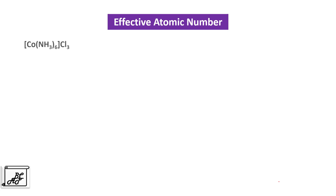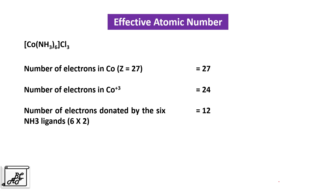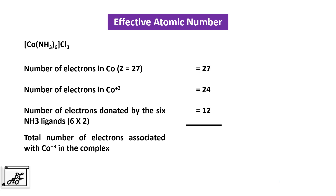Let's understand this with an example. The number of electrons associated with cobalt is 27, which is the atomic number of cobalt. The oxidation state of the central metal atom cobalt is plus 3. The total number of electrons in the Co3+ ion is 24. There are 6 ammonia ligands and each ligand donates a pair of electrons, so 6 ligands donate a total of 12 electrons. The total number of electrons associated with Co3+ in this complex is 24 plus 12 equals 36. And 36 is the atomic number of the nearest noble gas, krypton. We can say that [Co(NH3)6]Cl3 follows the effective atomic number rule.